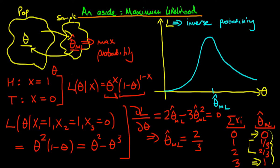Obviously this example is a bit contrived, and by providing an interval estimate of our parameter, you could include that value of one half. But as you can see, maximum likelihood potentially has some problems. The key issue is that in small samples, maximum likelihood can actually be quite biased.